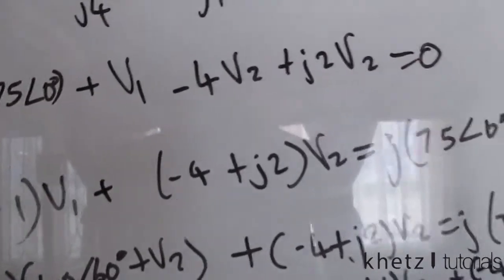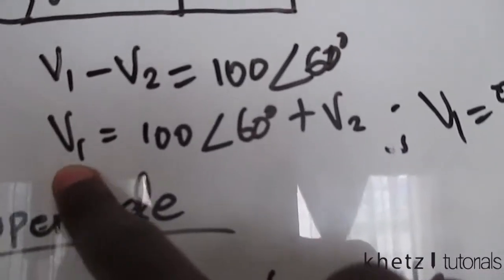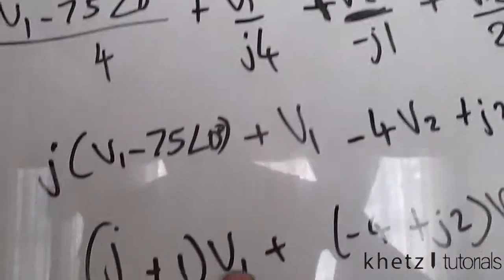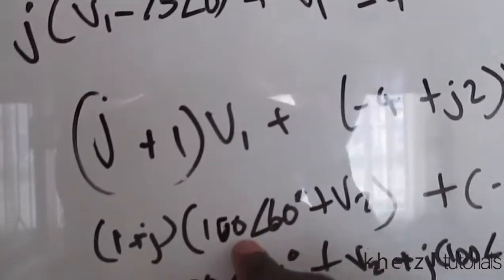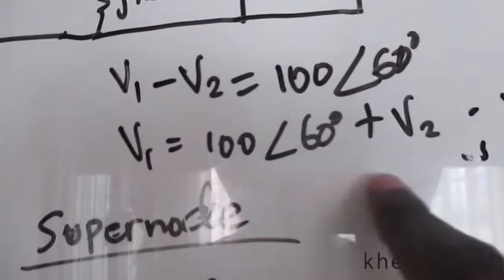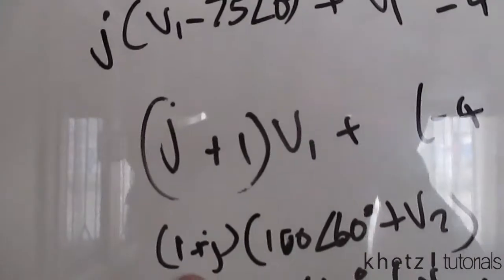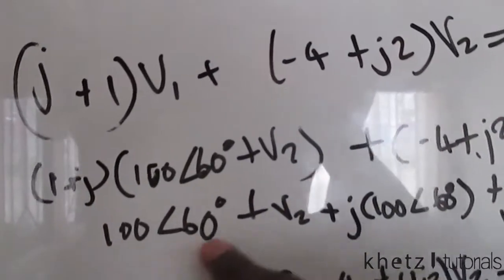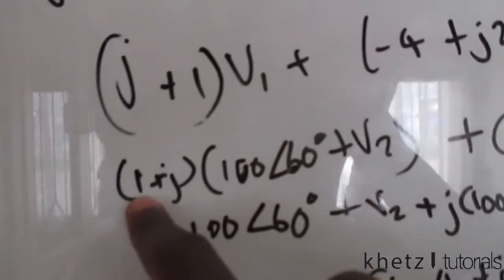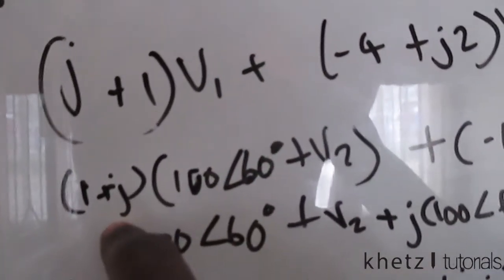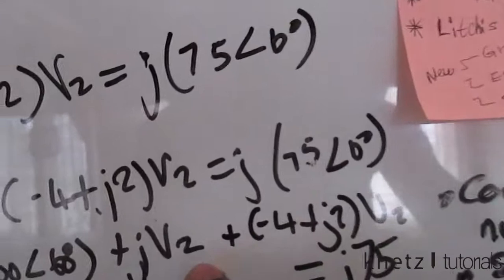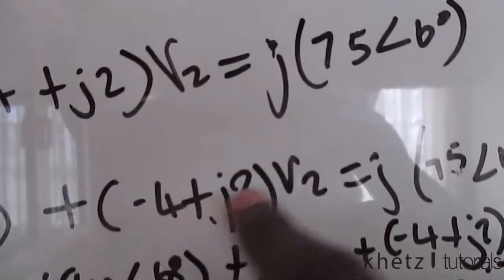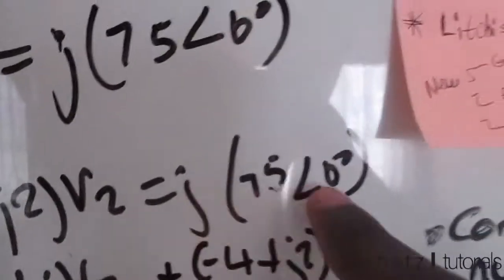Now we take the first equation — V1 equals the value of the voltage source plus V2 — and substitute it wherever we see V1. The voltage source value is 100, so we substitute (100 + V2). Multiplying out the brackets, multiplying by 1 gives the same terms, and multiplying by J gives J·100 and J·V2, which appear in our expanded equation.